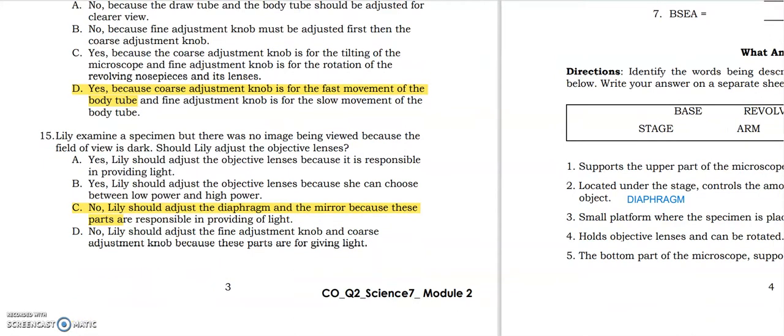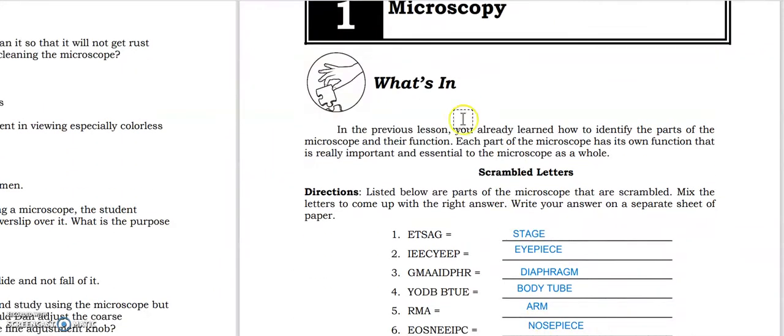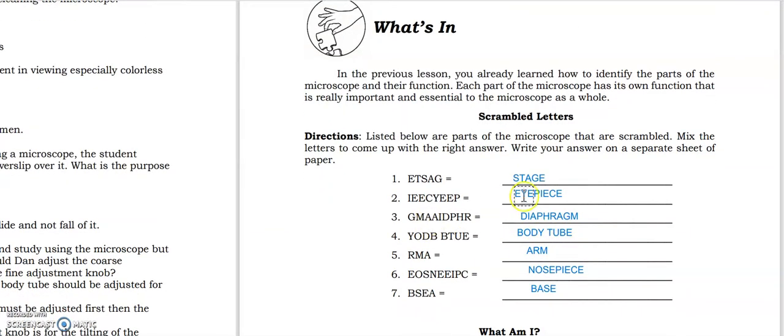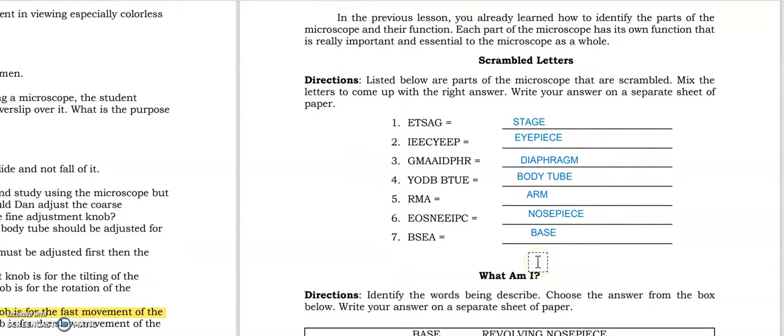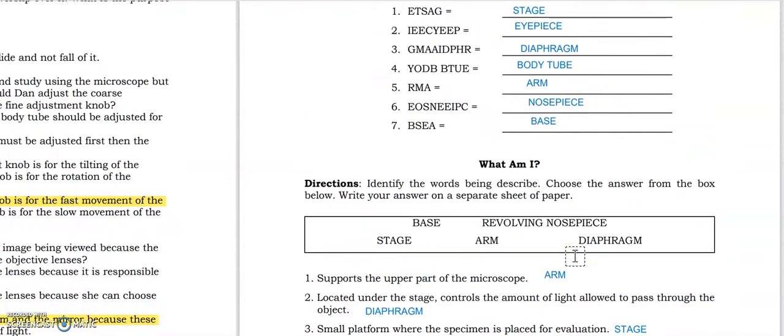So that's the What I Know portion. All right, now let's proceed to the What's In portion. So in the previous lesson we already learned about the parts and functions of the microscope, so here it is scrambled. For number one, the answer is stage. Number two is eyepiece. Number three, diaphragm. Number four, body tube. Number five is arm. Number six is nosepiece, and number seven is base.